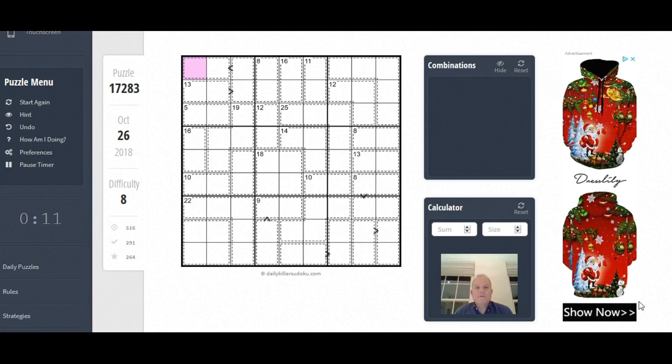Hello and welcome back to Cracking the Cryptic. Today I'm going to have a go at one of the puzzles from dailykillersodoku.com. This is a greater than killer with the difficulty rating of 8. Once these puzzles go above 4, they're pretty difficult. So do feel free to have a go at this puzzle yourself before I try and show you a way through it. But I'm going to start now and we'll just see how you could get through this.